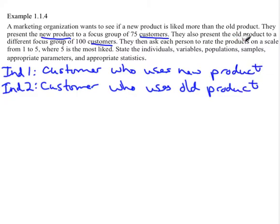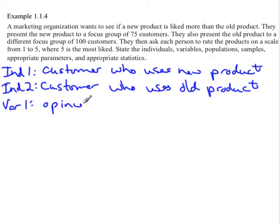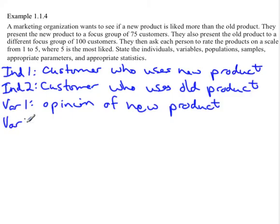Next we figure out what we actually measured from these people. Looking at the example, we notice they're talking about rating on a scale, and when you rate things on a scale you're giving your opinion. So variable one is the opinion of the new product, and variable two is the opinion of the old product.